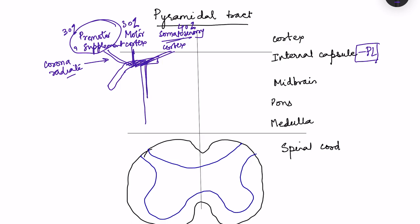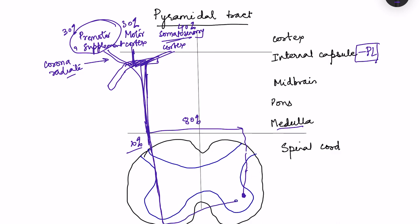After passing through the posterior limb of the internal capsule, the fibers descend to the lower part of the medulla where 80% of them cross over. The remaining 20% keep descending uncrossed. These fibers descend in the white matter of the spinal cord and ultimately terminate in the ventral horn. The 20% that did not cross in the medulla eventually cross at the spinal cord level. They synapse either directly on alpha motor neurons supplying muscles, or on interneurons which in turn contact many alpha motor neurons.